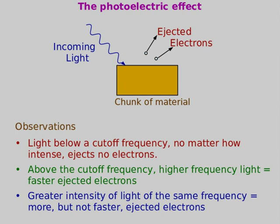So the photoelectric effect is: shine light on a material, and if the light is the right kind, electrons come off. Apply a small electric field to accelerate those electrons away, and detect them as a current — because moving charges constitute a current. This is actually used in practice: light shines on a sensor, current flows; block the light, the current stops, and the circuit detects that the light has been interrupted.